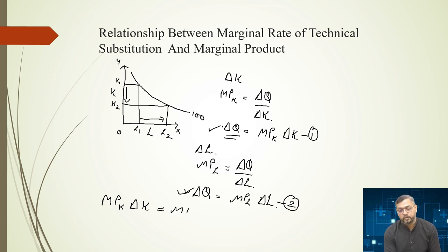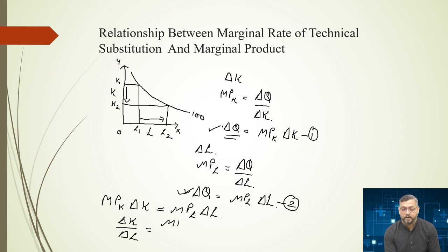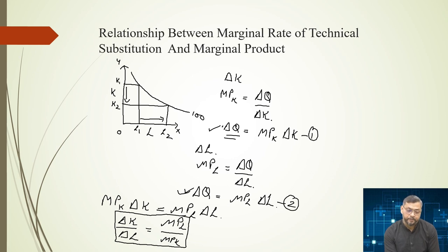Since this is an isoquant, the decrease in output due to reduction in capital is exactly compensated by the increase in output due to additional labor, keeping total output constant. Therefore: MP_K × ΔK = MP_L × ΔL. Rearranging, ΔK/ΔL = MP_L / MP_K, which gives us MRTS = MP_L / MP_K — establishing the relationship between marginal rate of technical substitution and marginal products.